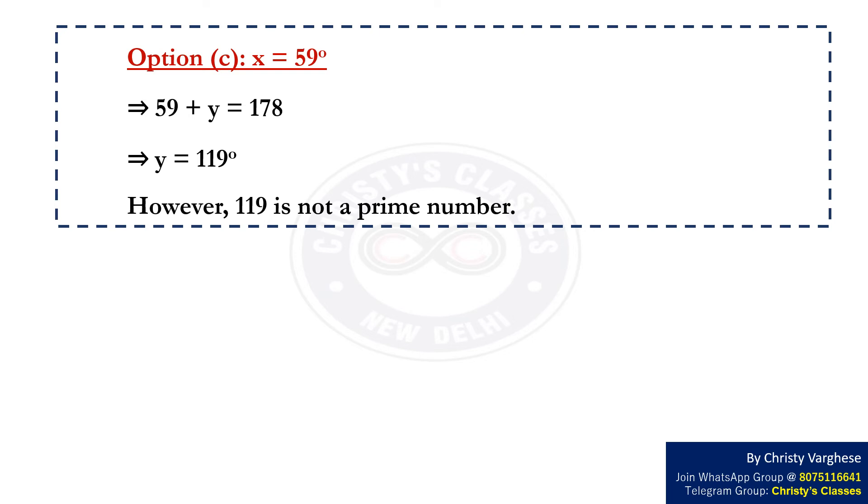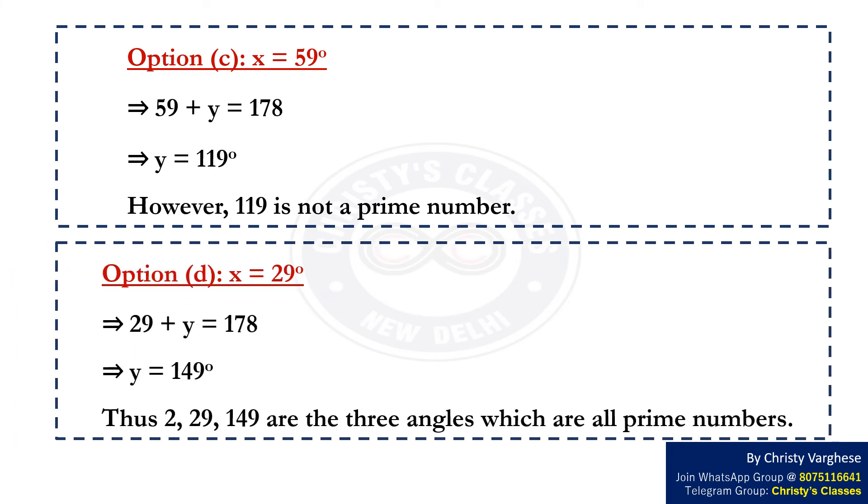This implies 29 plus Y equals 178, which implies Y equals 149 degrees. Thus, 2, 29, and 149 are the three angles, which are all prime numbers.